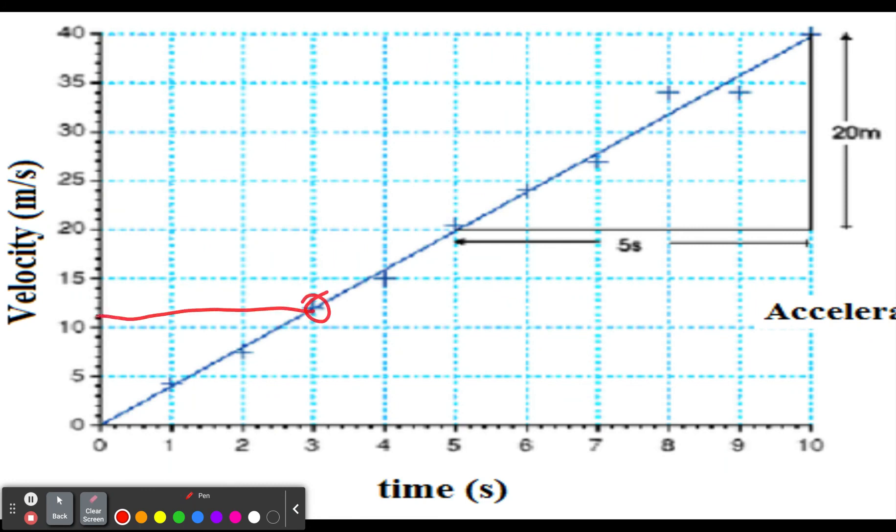So instead, we chose to pick this point and this point. Although, actually, it might be easier to pick the origin since this is going through the origin. That makes it even easier. So we're measuring how much does the y change. That's our first thing. That's what's going to go in the numerator.